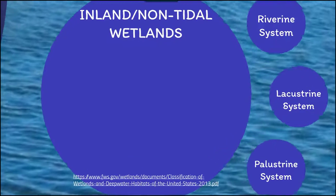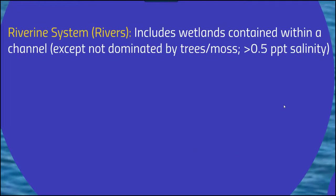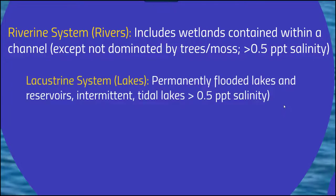Inland and non-tidal wetlands are a bit different. The riverine or river system is wetlands contained within a channel — ones that are not dominated by trees and moss and have a salinity greater than 0.5 parts per thousand. Lacustrine systems or lakes are going to be permanently flooded lakes and reservoirs — they can also include intermittently flooded lakes and tidal lakes with greater than 0.5 parts per thousand salinity.